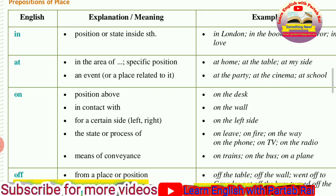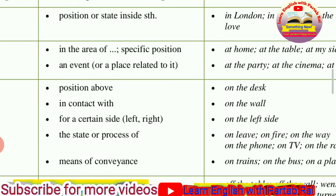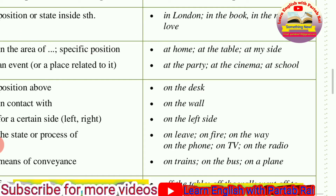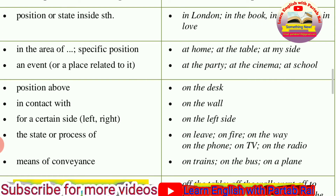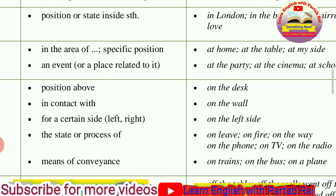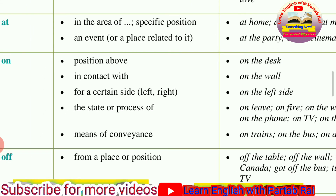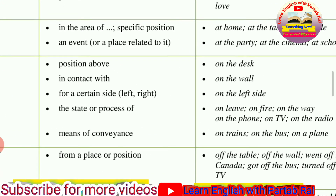Another use of ON is that it shows the state or process of something. When something is in process, you use ON. For example: on work means you are working; on fire; on the way means you are in the process of going somewhere; on the phone means someone is talking; on TV; on the radio. In this way you use the preposition ON to indicate an ongoing process or state.